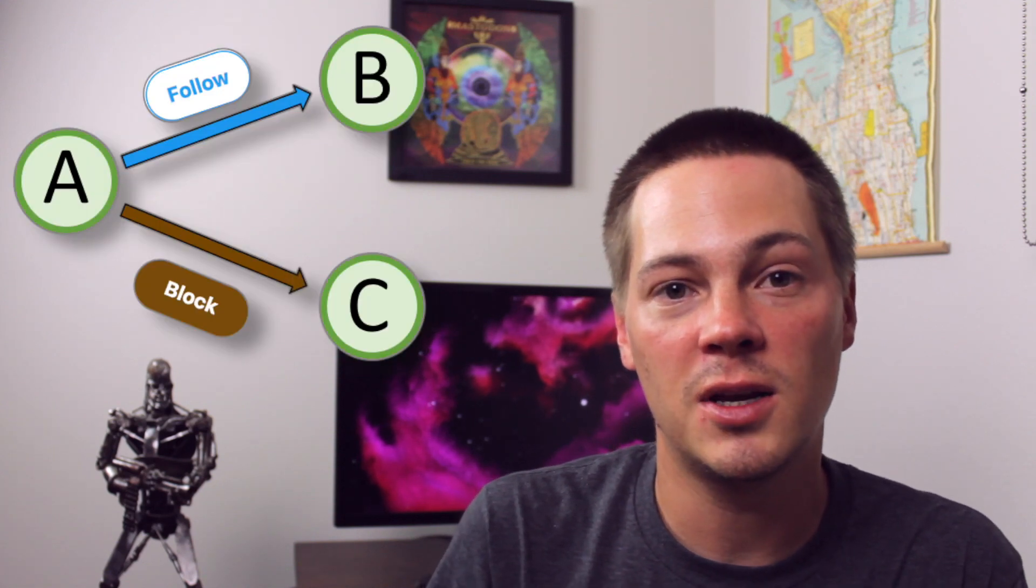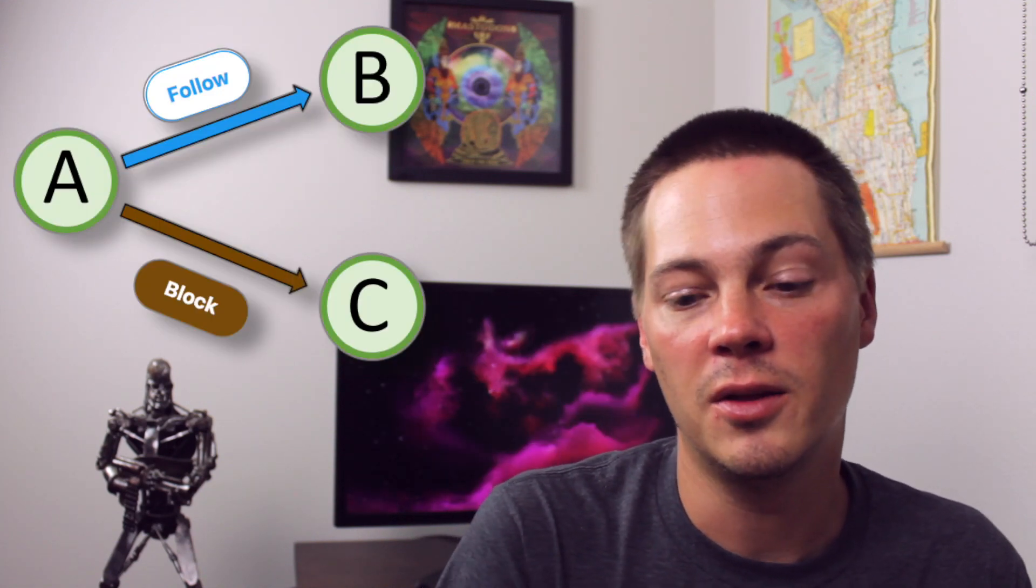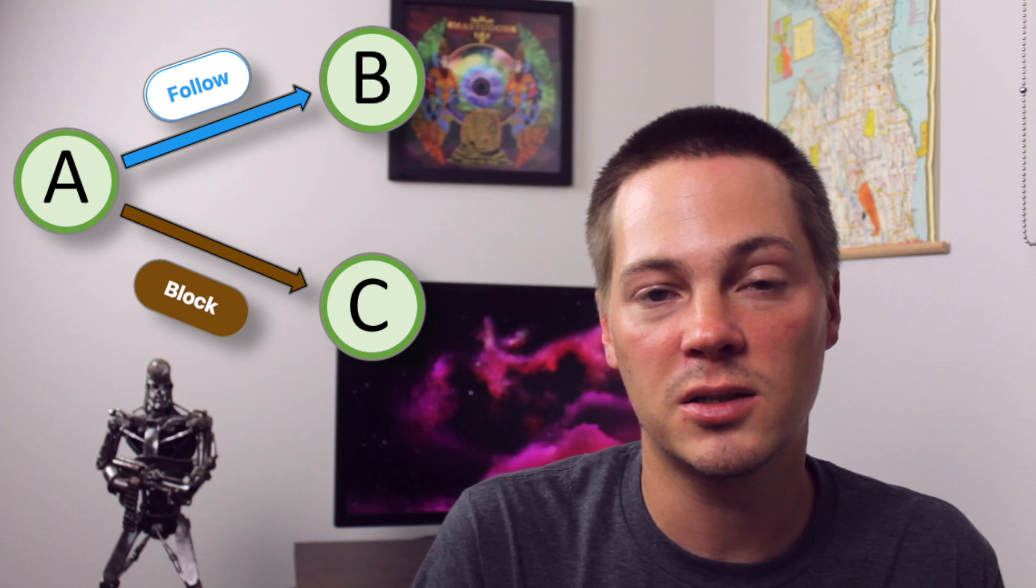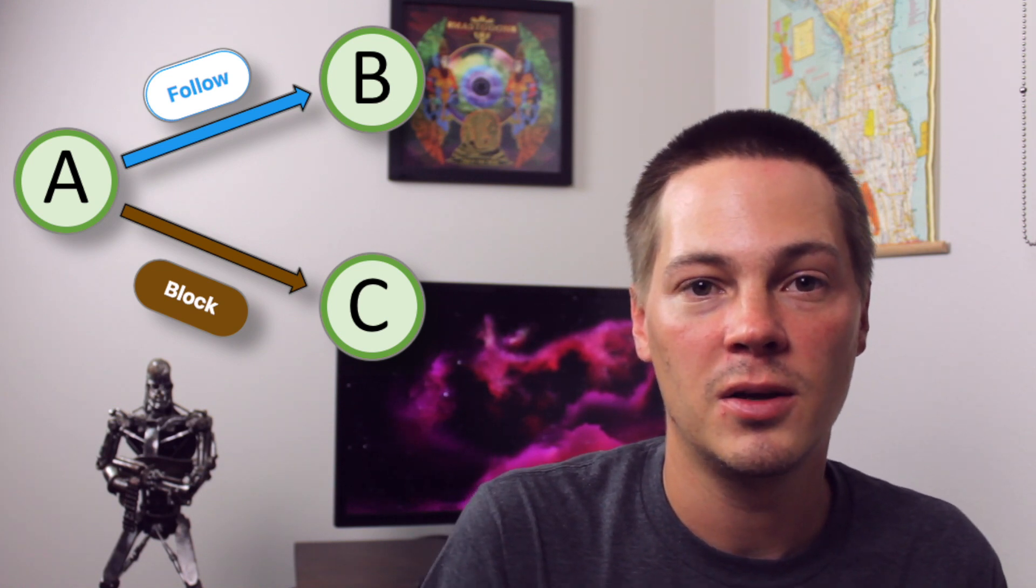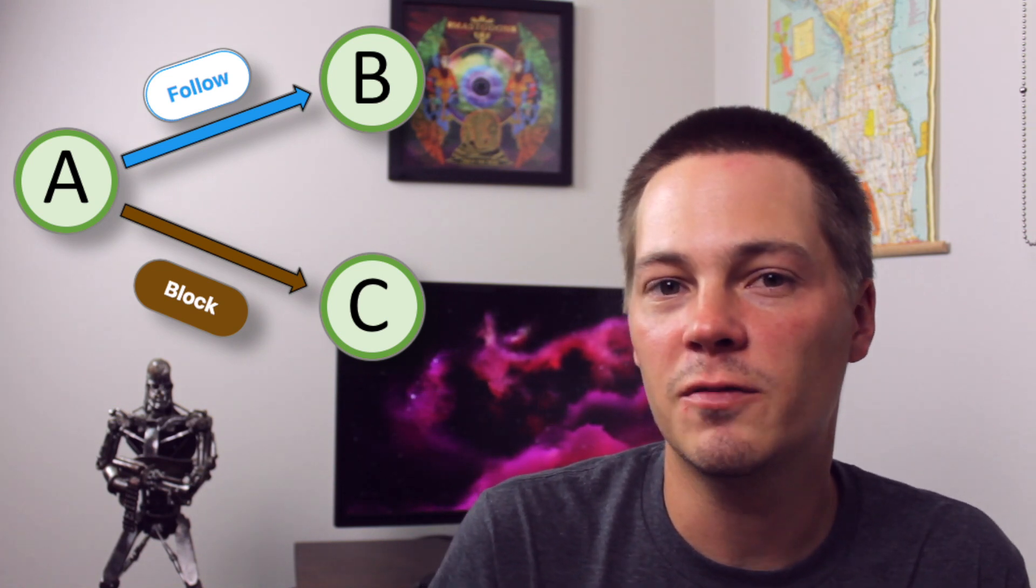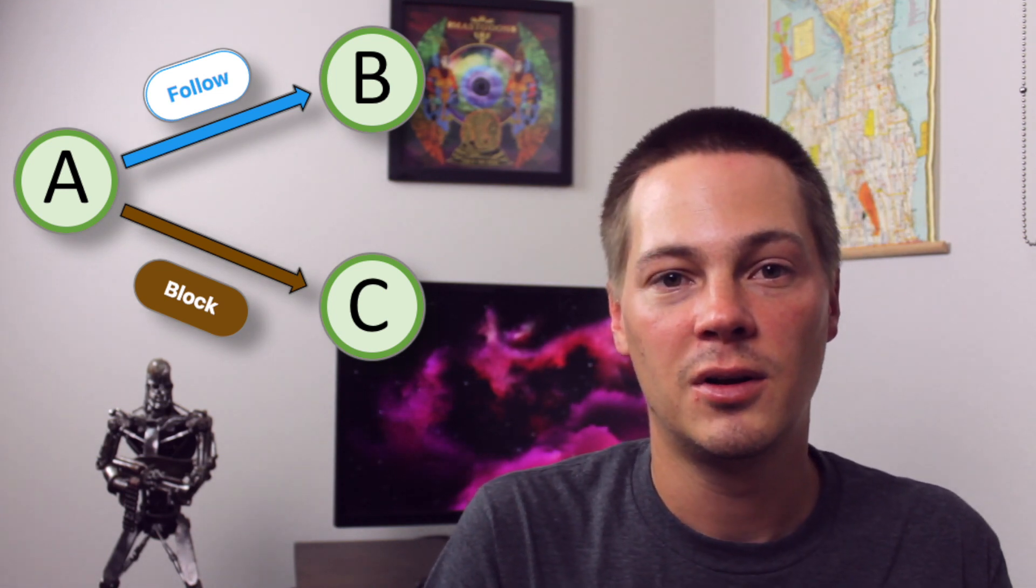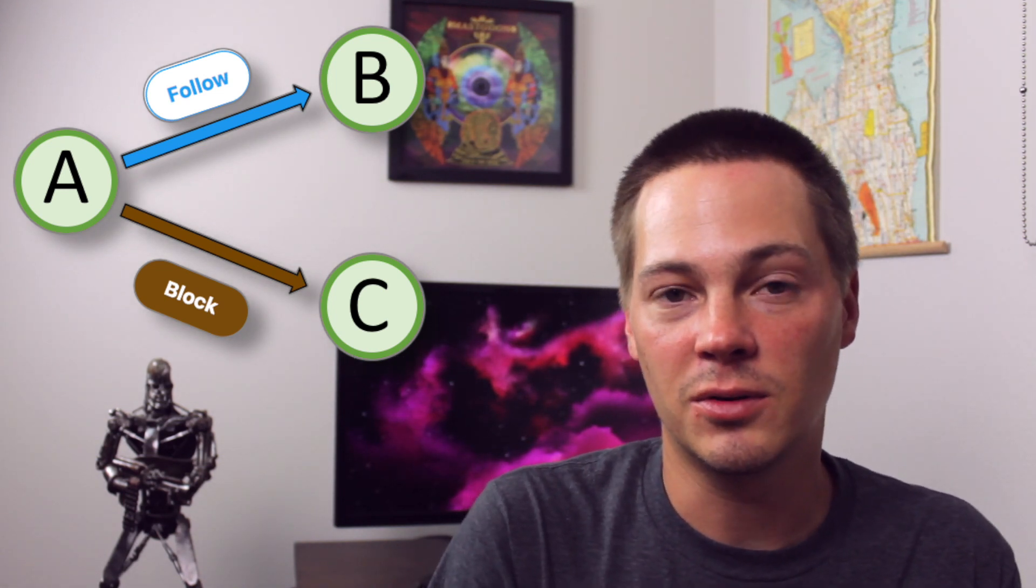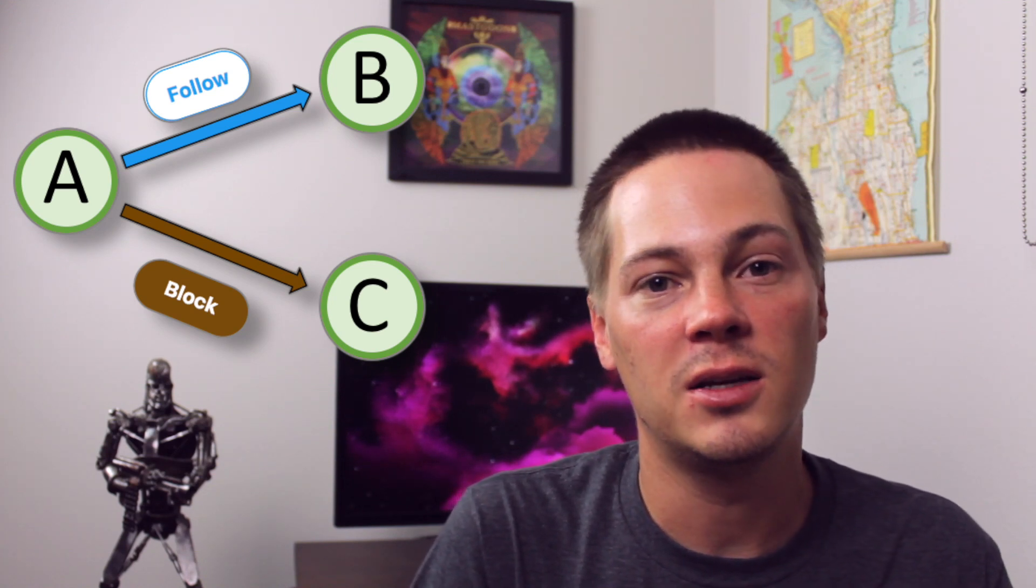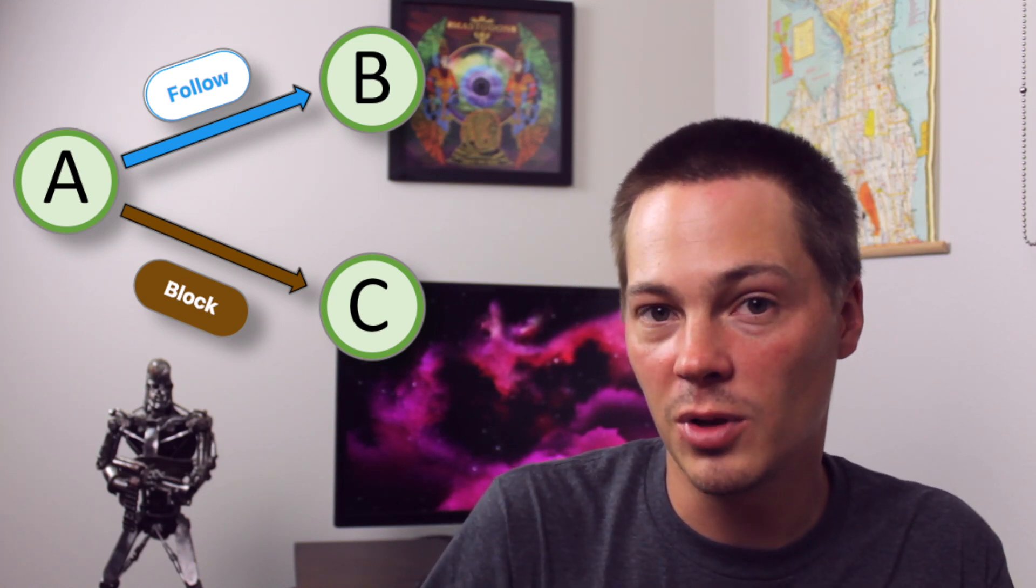So to provide a very specific example, let's say you have person A follows person B, and then you also have person A blocks person C. If you're updating the node representation of person A, does it really make sense to just average together B and C as if they're the same, even though in one case they're following, and in the other case they're blocking.